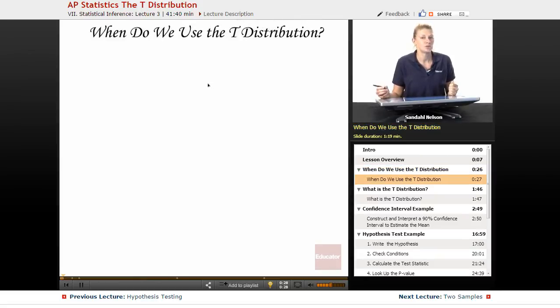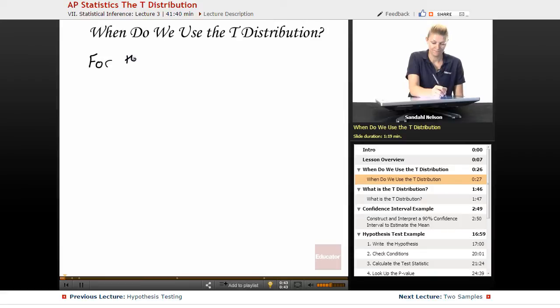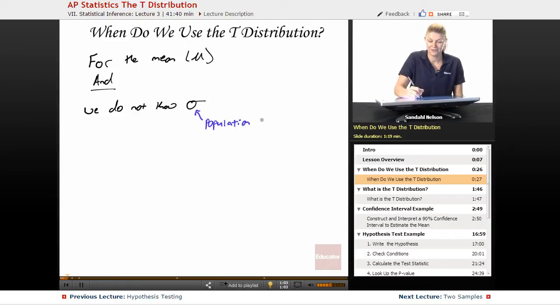So when do we use the t-distribution? The t-distribution is going to be very similar to the z or the normal distribution that we've been using thus far, except when you're doing a test or a confidence interval for the mean, and we do not know sigma, the population standard deviation.